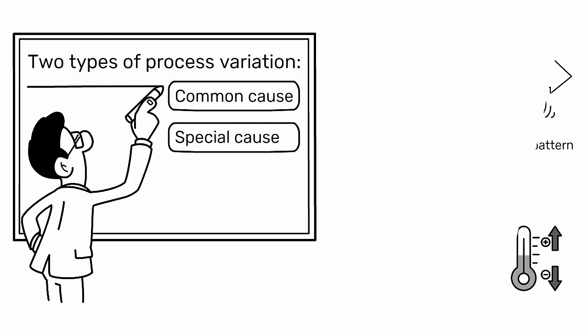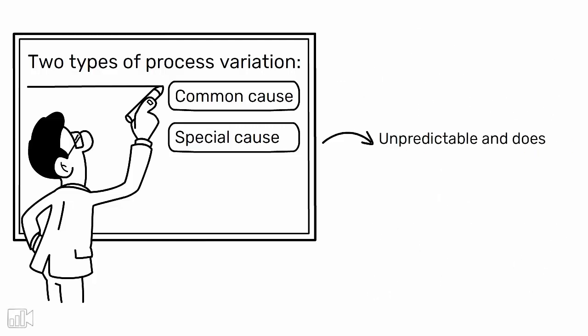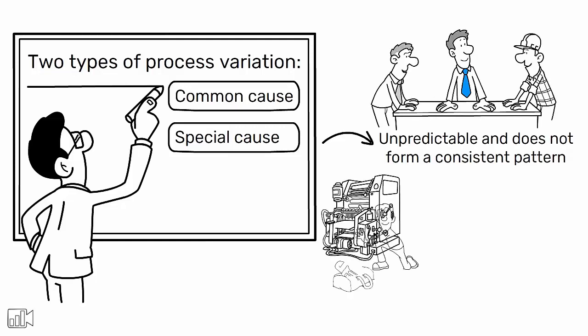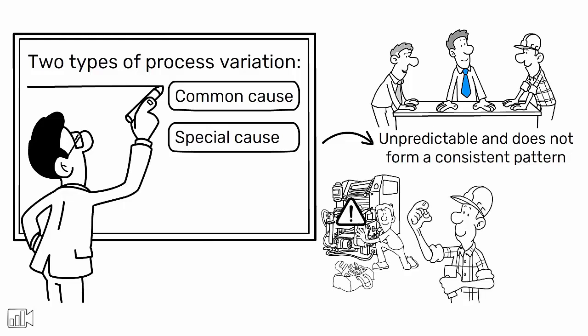Special cause variation, on the other hand, is unpredictable and does not form a consistent pattern. It's usually due to specific identifiable factors such as a machine malfunction, a sudden change in raw material quality, or human error.